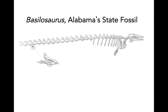Subsequent examination showed that Basilosaurus is not a dinosaur at all — it's actually a marine mammal. We know this because the site where it was found is known to have been a marine environment, and also we can look at the pelvic girdle, which is very reduced relative to the size of the organism. Additionally, the nostrils of Basilosaurus are found somewhere in the middle of the sloping forehead.